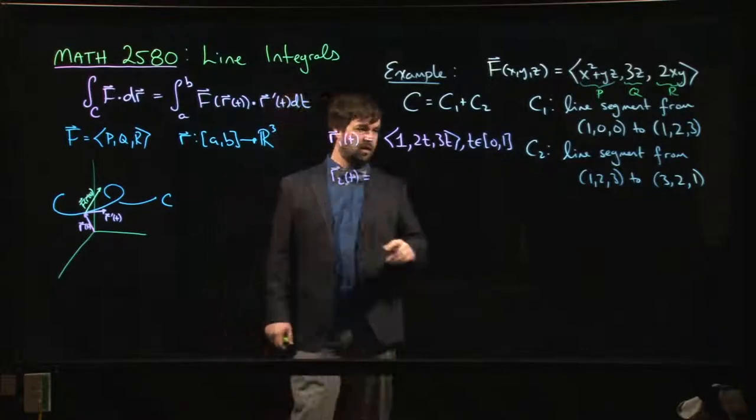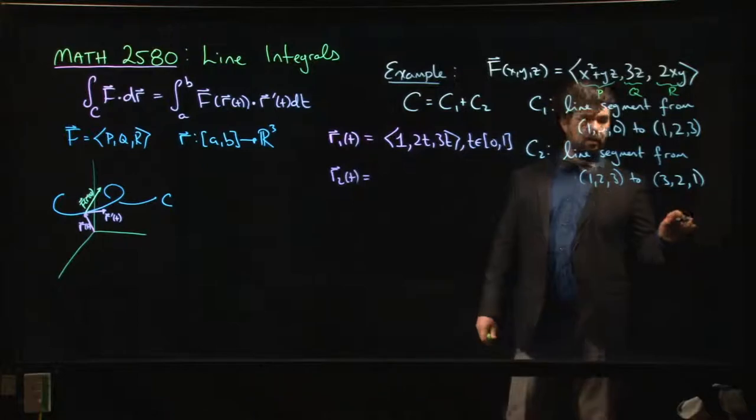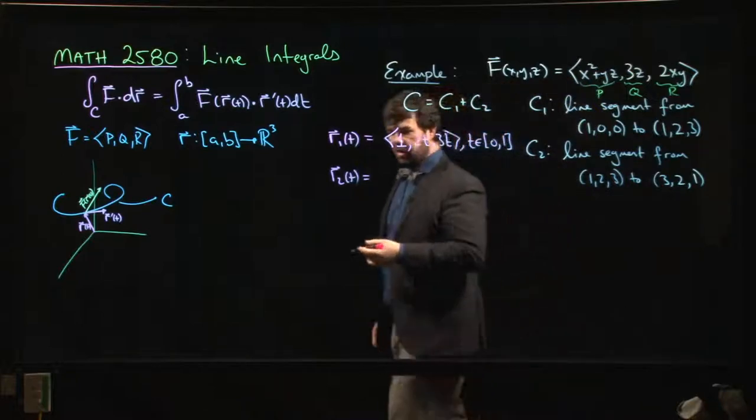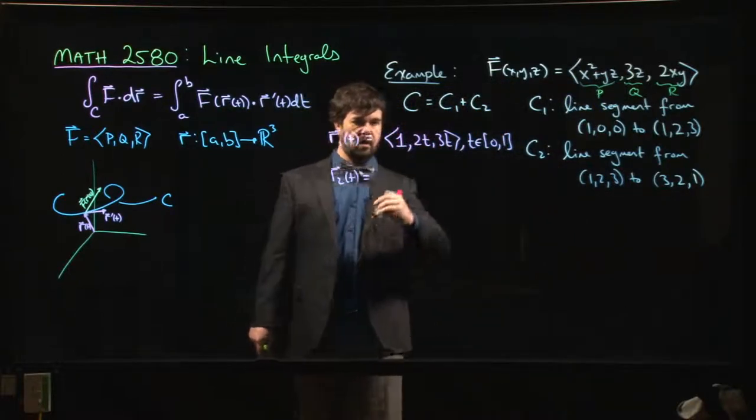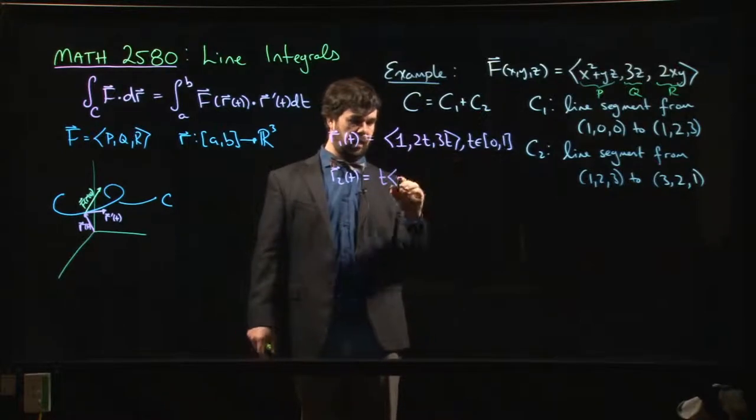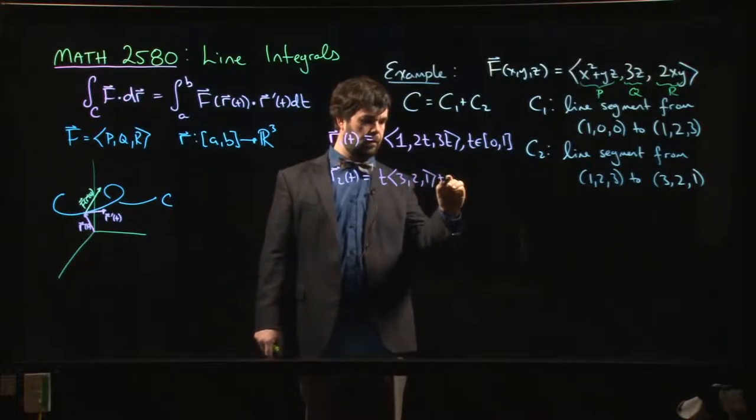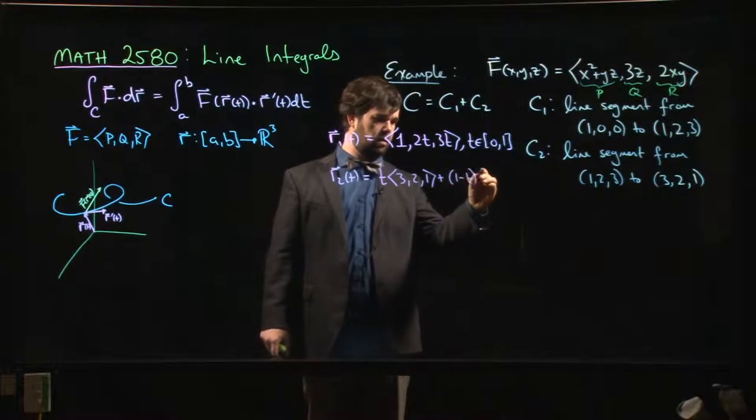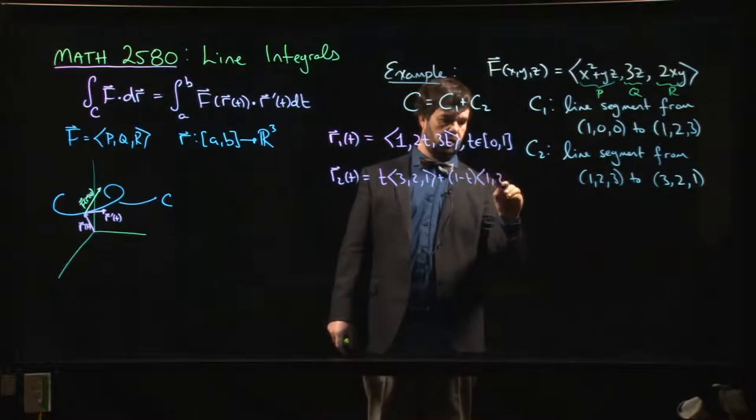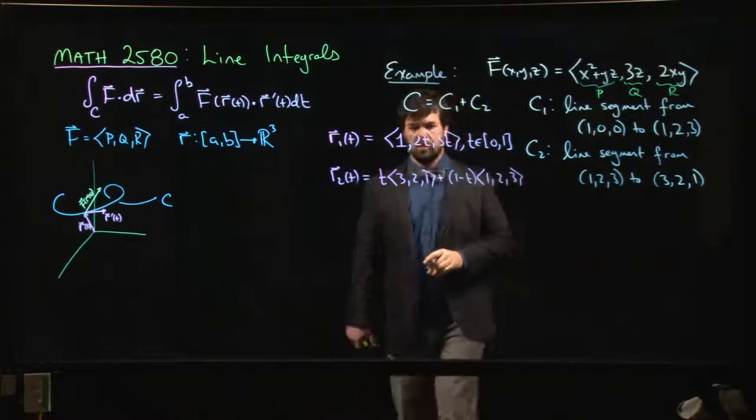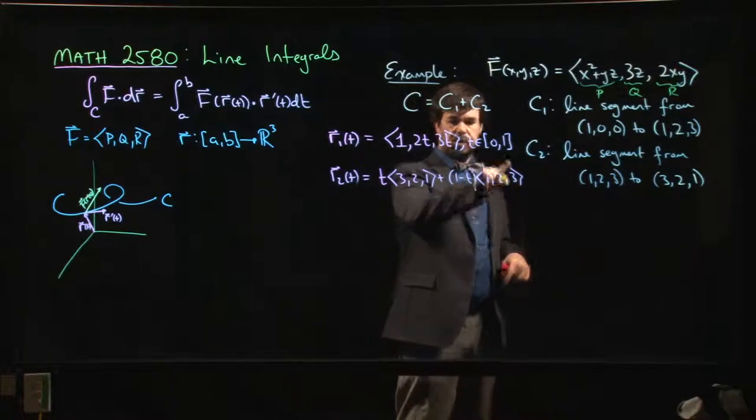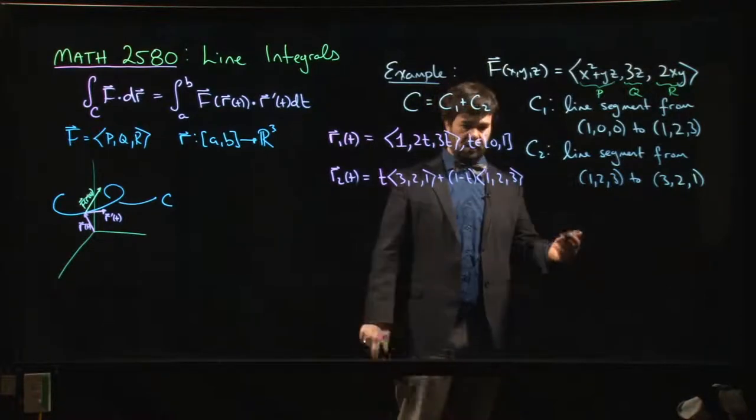R2, parameterizing the second curve—you might find it's a little bit trickier here. If you're not sure how to come up with the parameterization off the cuff, there is one trick that always works: you're going to do t times the position vector that you want to end up at, so t times 3, 2, 1, and then we do 1 minus t times the position vector for where we want to start, so 1, 2, 3. You can see that this is going to—when t is equal to 0, we're at the point 1, 2, 3. When t is equal to 1, we're at the point 3, 2, 1. It does the job.